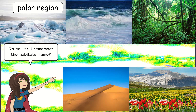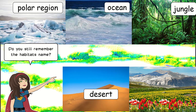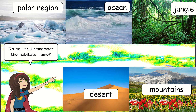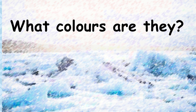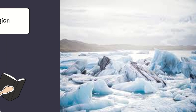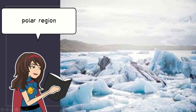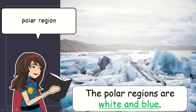The habitats are: first, polar region; second, ocean; third, jungle; fourth, desert; and the last one is mountains. I repeat: polar region, ocean, jungle, desert, and mountains. Today we are going to learn the topic 'What colors are they?'